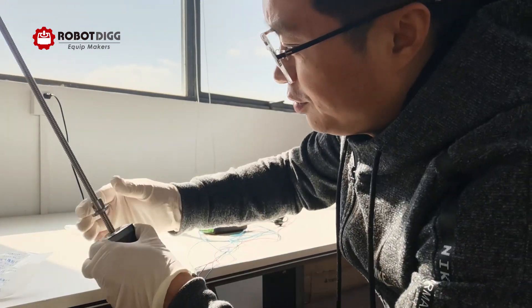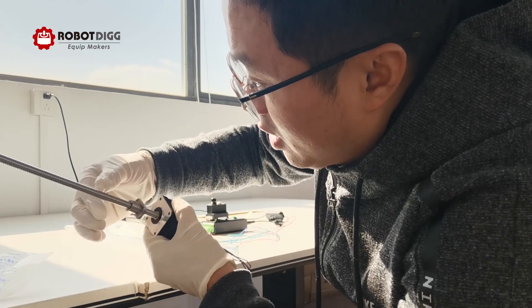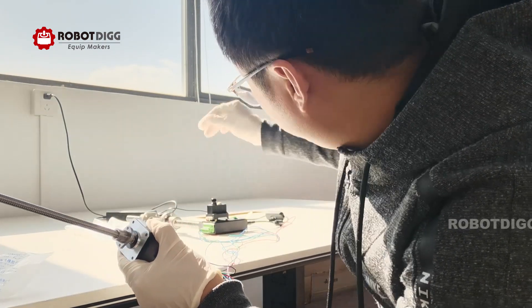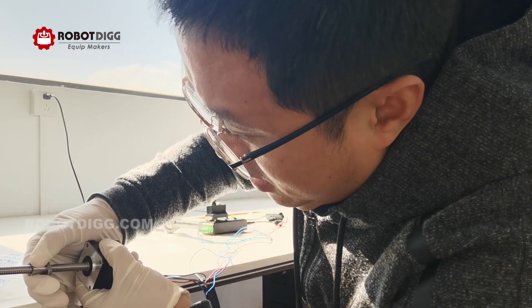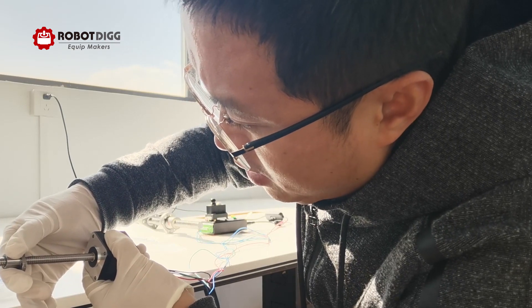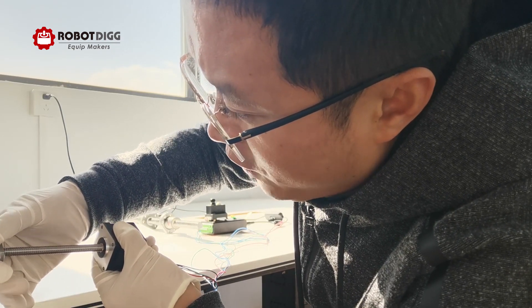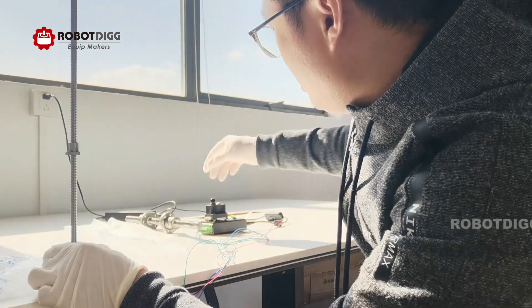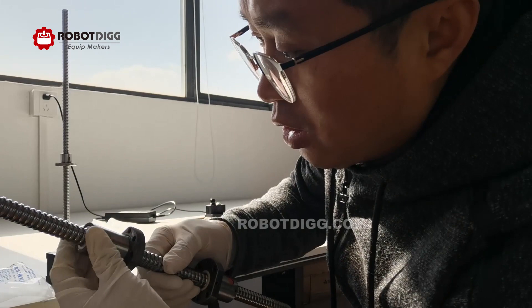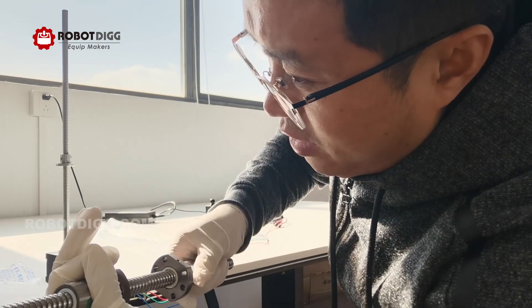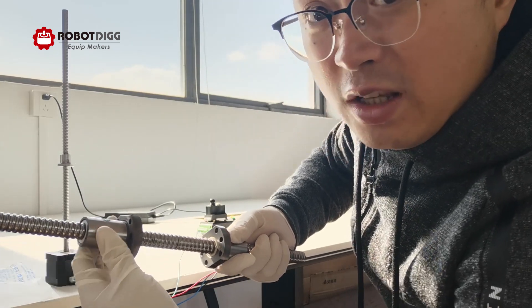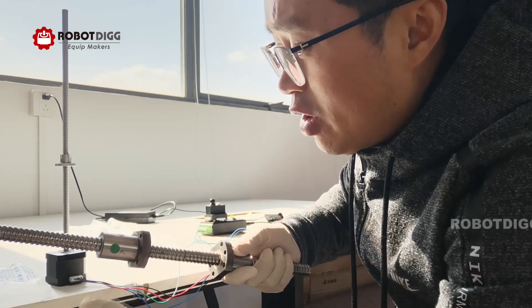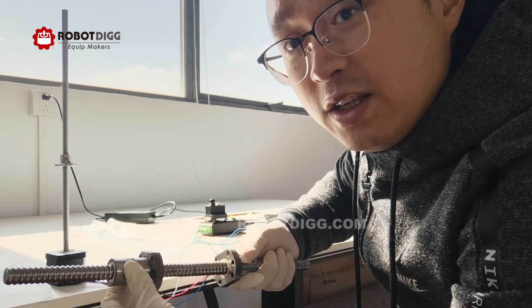Here you can see the precision of this ground ball screw could be C5. You know, if you use the rolled ball screw, I can't tell you what is the precision grade, because in Europe some of the manufacturers will tell you that it could reach C7 grade, but I'm not sure.